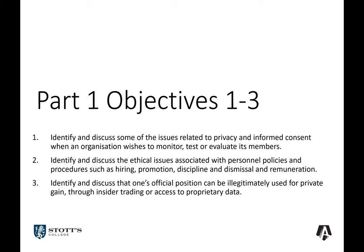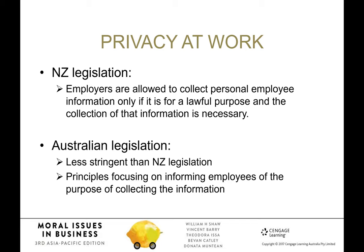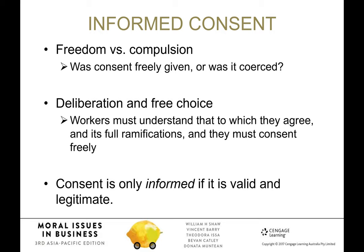Our first three objectives cover privacy, ethical issues in personal policies, and illegitimate use of an official position for private gain. In New Zealand, privacy legislation allows employers to collect personal information about employees for a lawful purpose and only when that collection is necessary. The Australian legislation is much less stringent — it requires informing employees of the purpose for collecting information, but there's no real limit to what information can be collected beyond the moral and ethical guidance of the organisation.